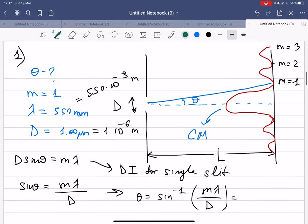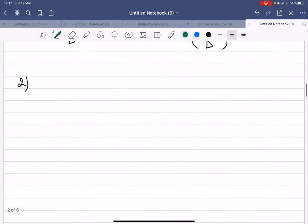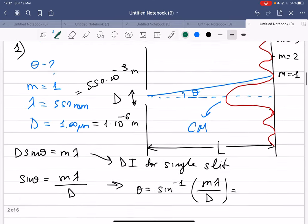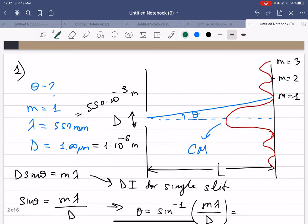We can use this single slit experiment picture and formula as well. So the given values here is the lambda, the wavelength. So if the wavelength for instance is coming here, let's say this is your wavelength.